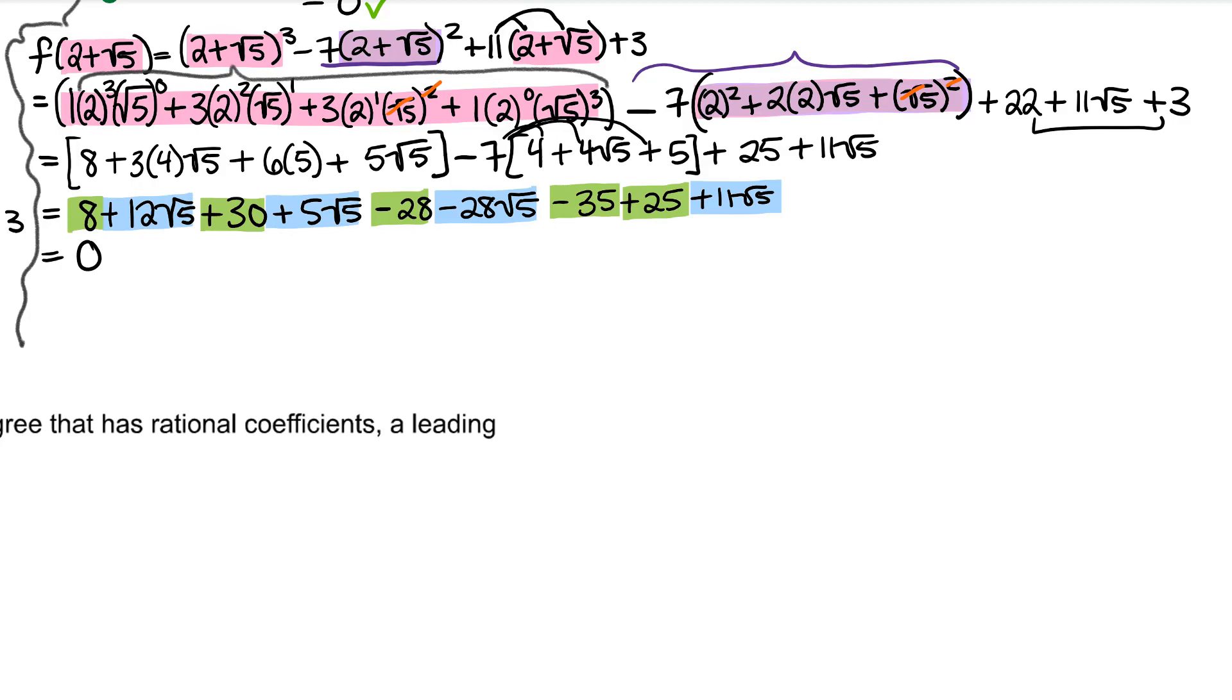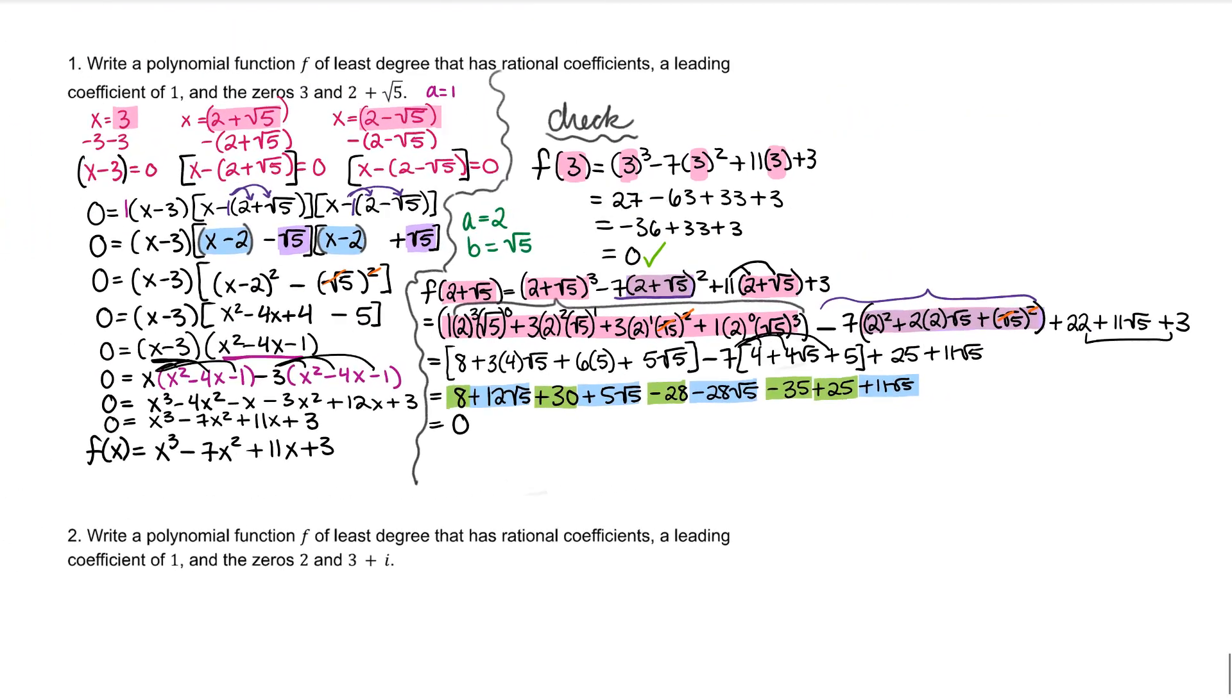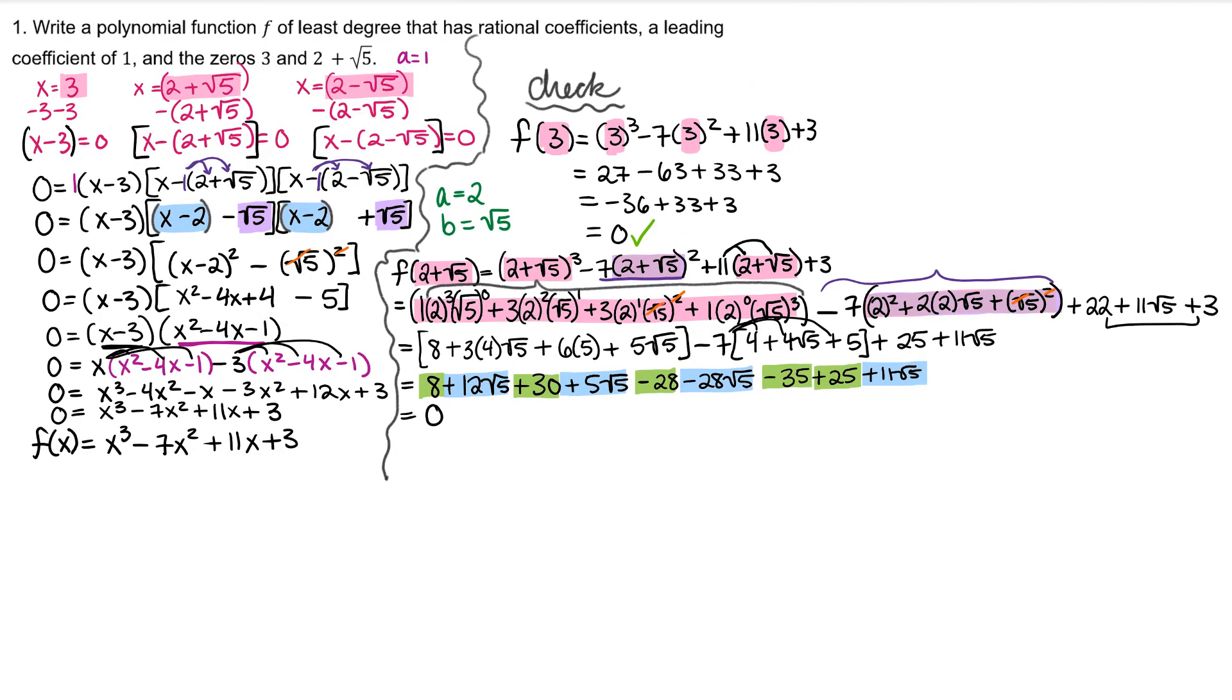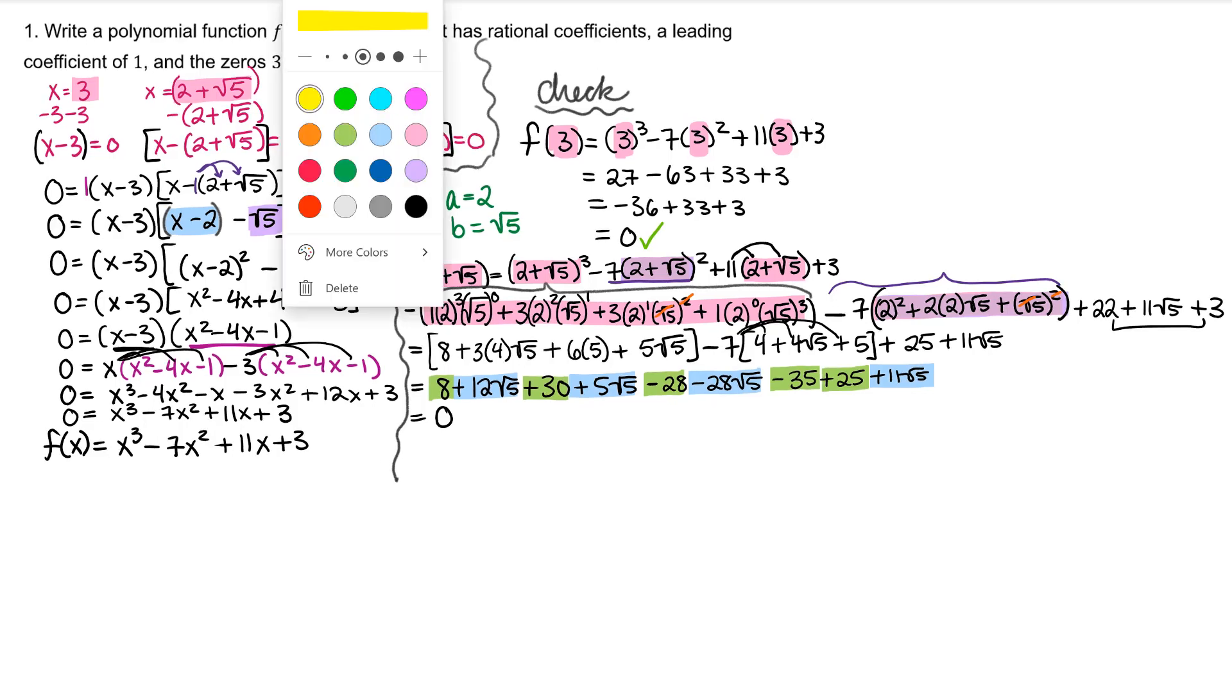And once you combine like terms, you get 0. That was definitely a fair amount of algebra for that check. Thankfully, because of the irrational conjugates theorem, if 2 plus root 5 is a zero, then 2 minus root 5 is a zero. And we don't need to also check that one.